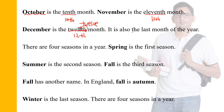December is also the last month of the year. There are four seasons — again use 'there are' because seasons is in plural form. There are four seasons in a year. Spring is the first season. Summer is the second season. Fall is the third season. Fall has another name: in England, fall is called autumn. Winter is the last season.